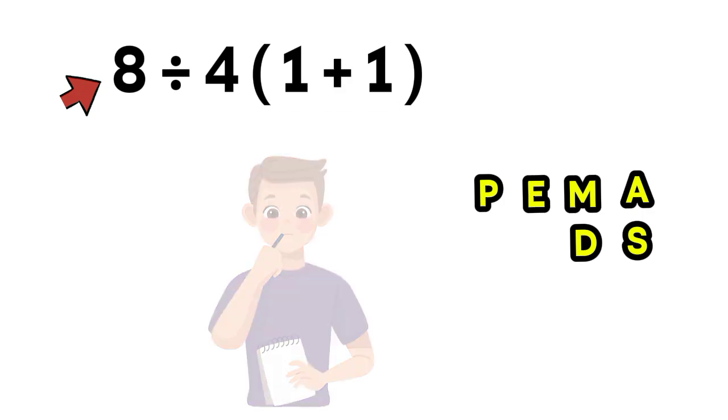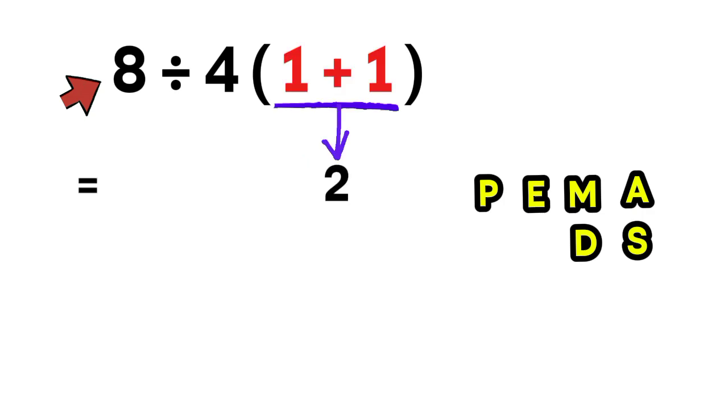So let's solve it properly. Inside the parentheses, 1 plus 1 gives us 2. So now the expression becomes 8 divided by 4, then multiplied by 2.